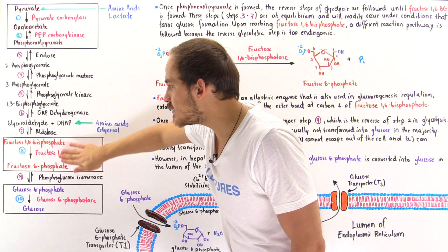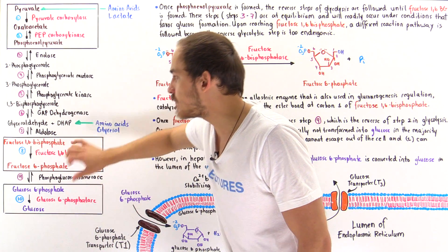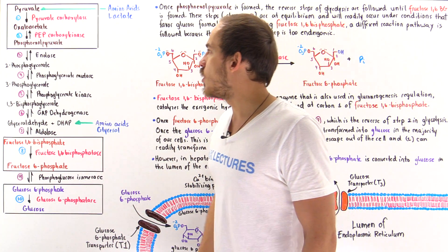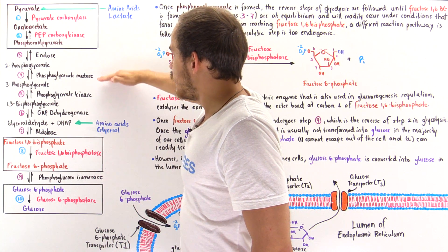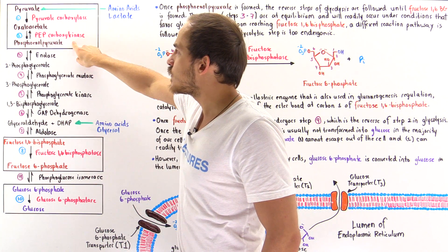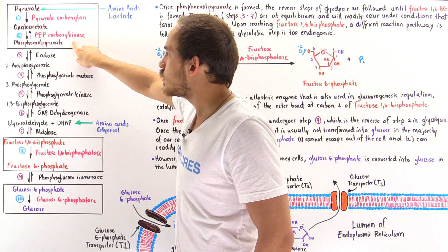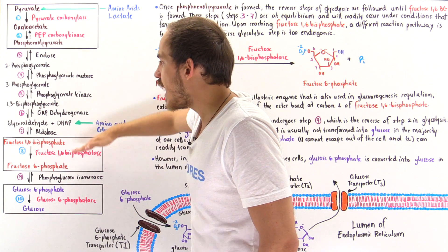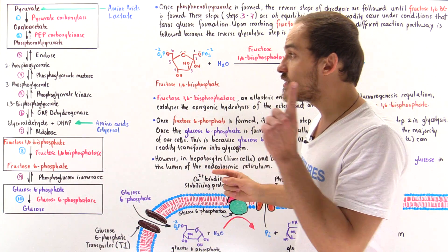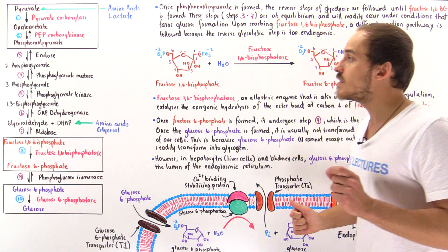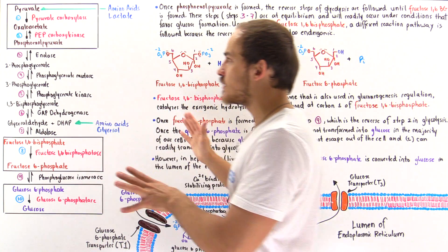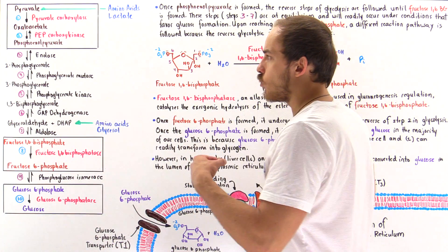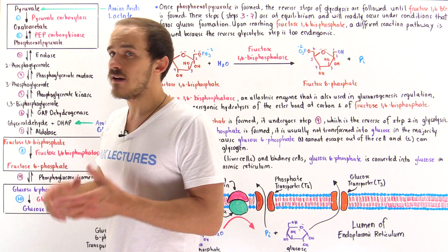All remaining steps except step number ten also take place in the cytoplasm. Once we form phosphoenolpyruvate, we follow steps three through seven, which are essentially the reverse steps of glycolysis and even use the same exact enzymes.